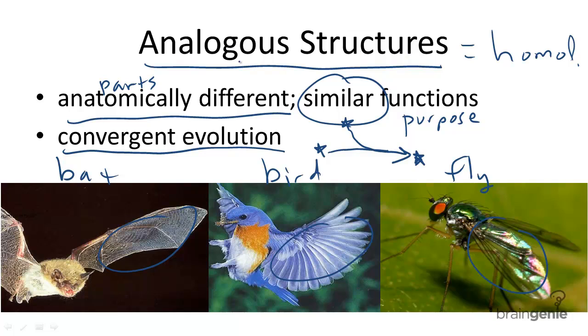So, it's important to remember the difference between analogous structures and homologous structures. Analogous structures are anatomically different, whereas homologous structures are anatomically similar, such as the bones in a whale flipper and a human arm.